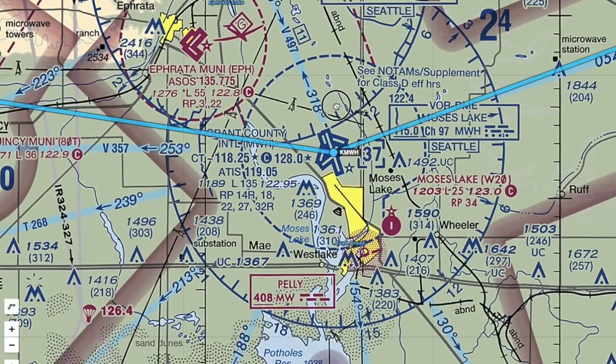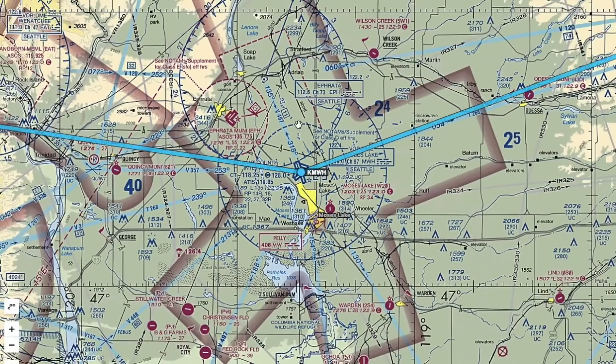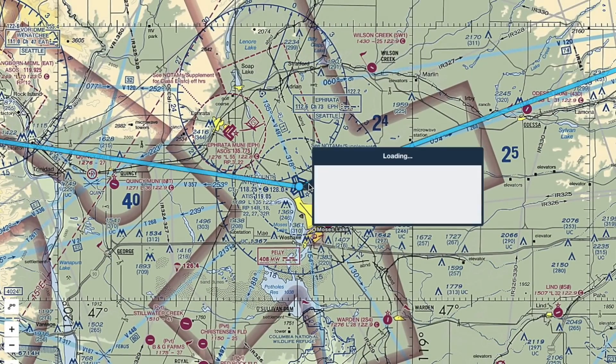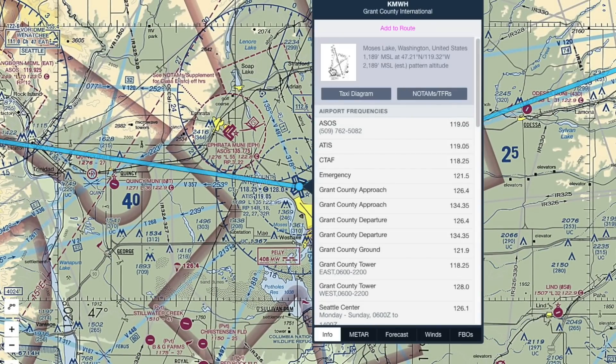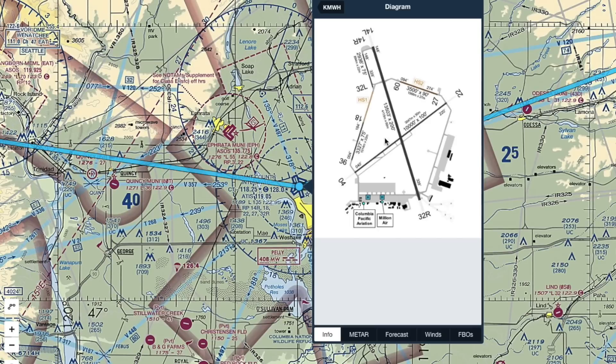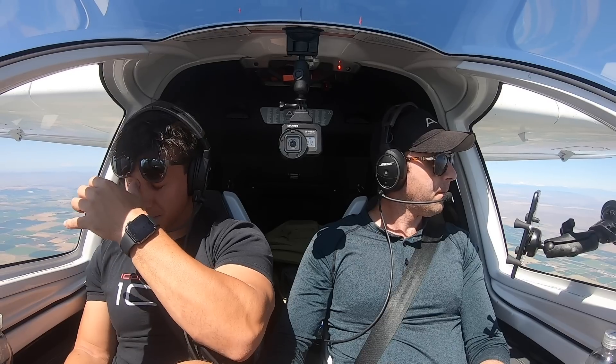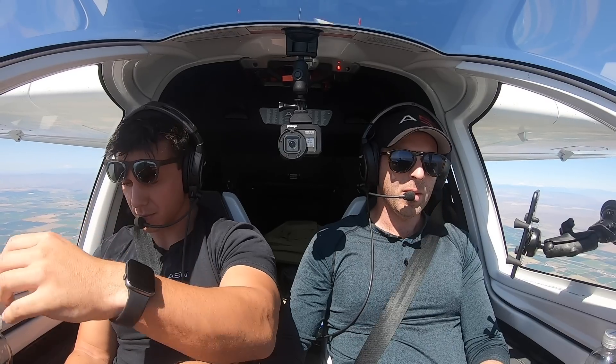I'm a low-time pilot with most of my time in Los Angeles. Grant County is basically an international airport — it has five runways. We decided to contact Grant County approach before going into the airfield, both because I think you have to per the chart, and because we wanted to get an idea of what runways they were working off of.